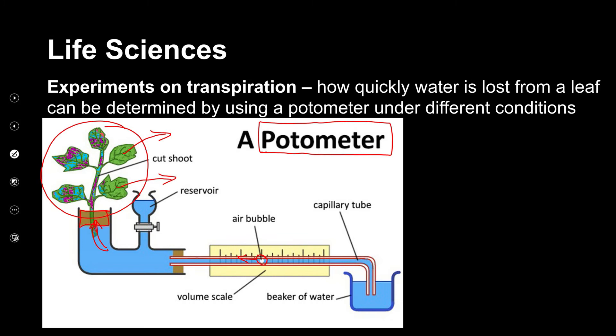As the plant loses water through transpiration, it sucks water up from the potometer. To work out how fast it's sucking the water up, you introduce an air bubble into the capillary tube. As the plant sucks water up, the bubble in the capillary tube moves closer to the plant. The faster it moves, the faster transpiration is occurring — if lots of water is being given off, the bubble moves very, very quickly.